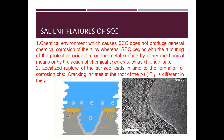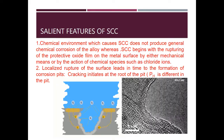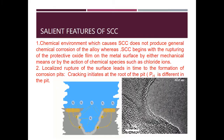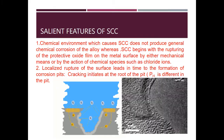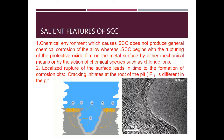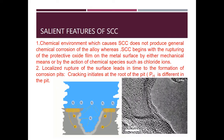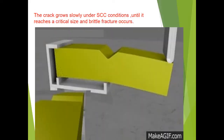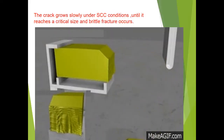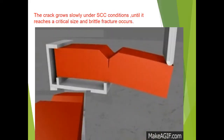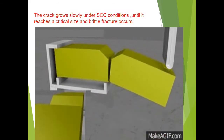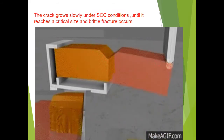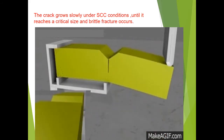Secondly, localized rupture of the surface leads in time to the formation of corrosion pits. The pH of the corrosion pit is different to that of the surface. Cracking initiates at the root of the pit. The crack grows slowly under stress corrosion cracking conditions until it reaches a critical size and brittle fracture occurs.